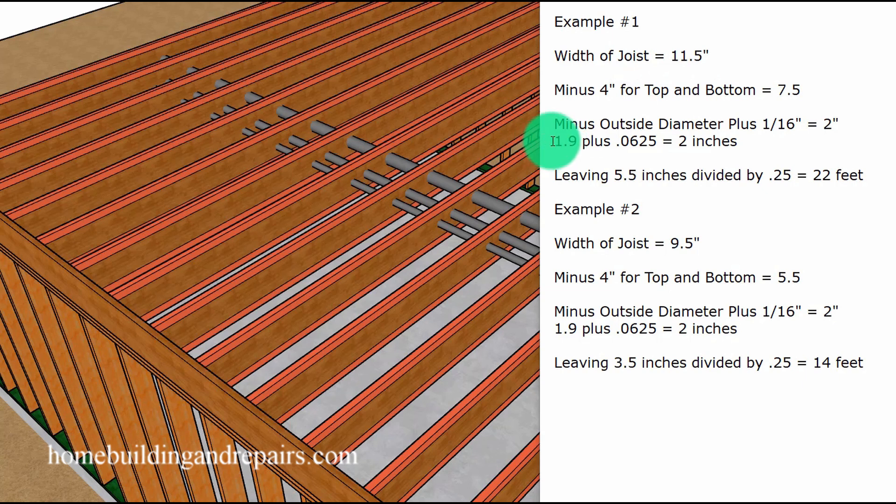That's probably going to have an outside diameter of 1.9 inches. So let's start with the width of the joist, 11.5 inches, and then we're going to subtract four inches. This four inches represents the two inches on the top and the bottom, leaving us an inside space of seven and a half inches.